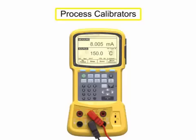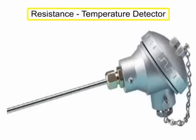Process calibrators are used by technicians to measure and calibrate sensors and transmitters. Using an RTD, or Resistance Temperature Detector, the initial step of calibration is verifying the accuracy of the temperature-sensing device.